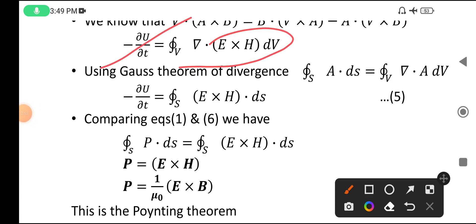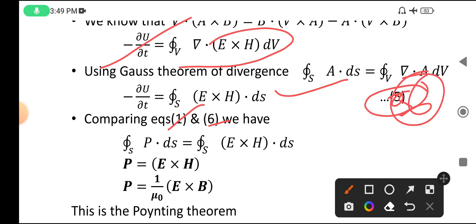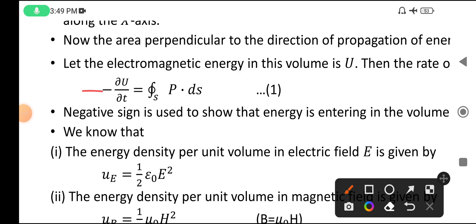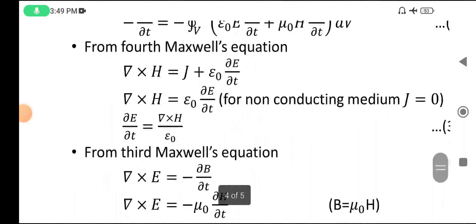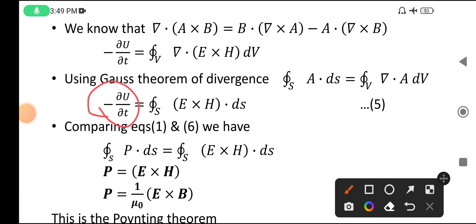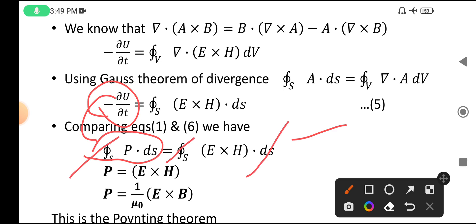Comparing equation one (−∂u/∂t = ∫P·ds) with equation six (which we just derived), both sides match. So comparing these: the ds terms cancel and in place of P we have E × H.